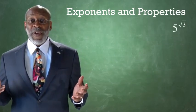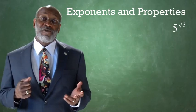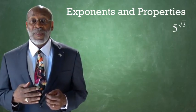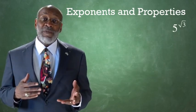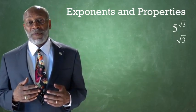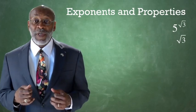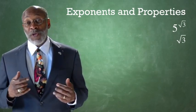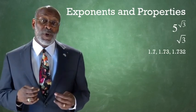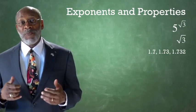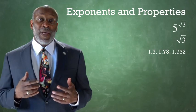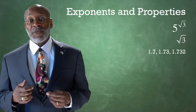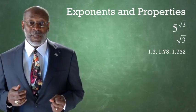But how do we evaluate a number like 5 raised to the power square root of 3? Here we have to approximate the square root of 3 to a rational number. We can use an approximation like 1.7, 1.73, 1.732, etc. The closer the approximation is, the more accurate the result.